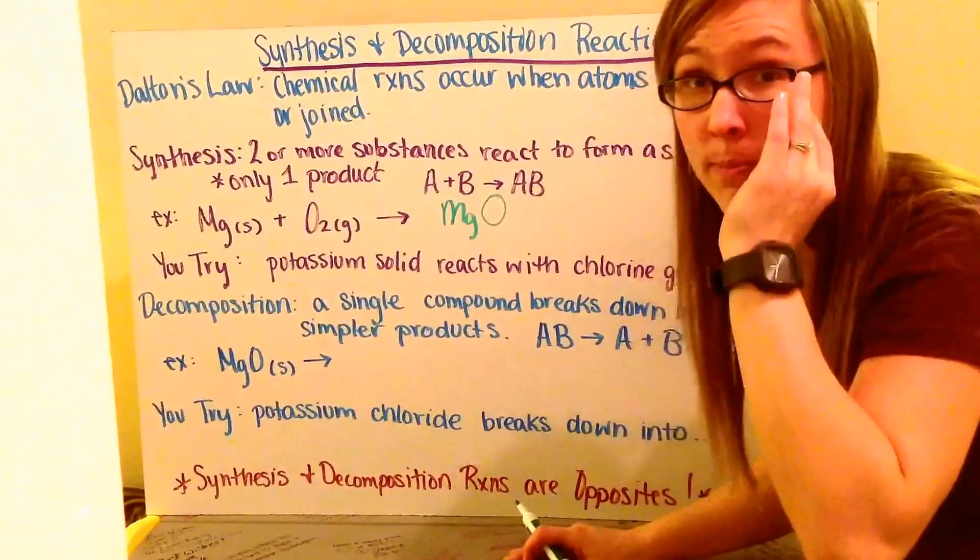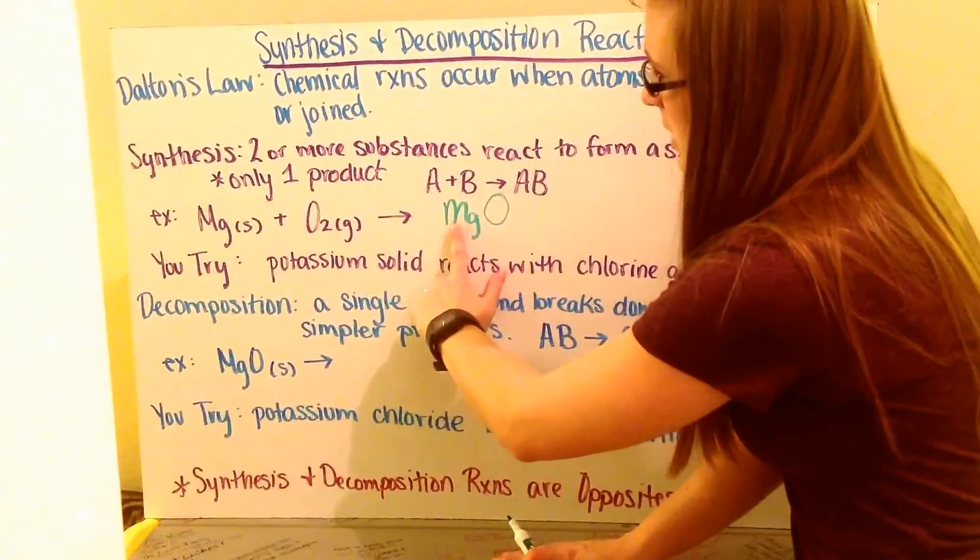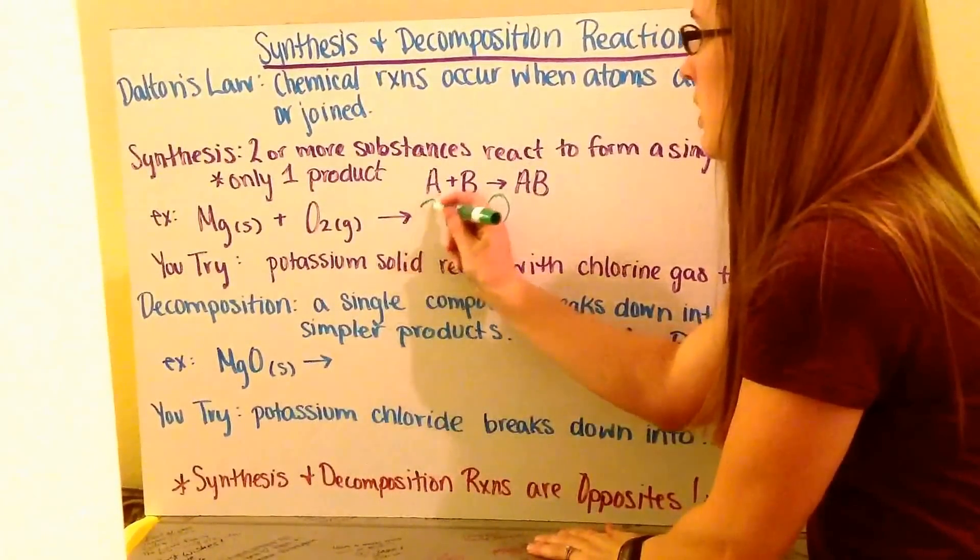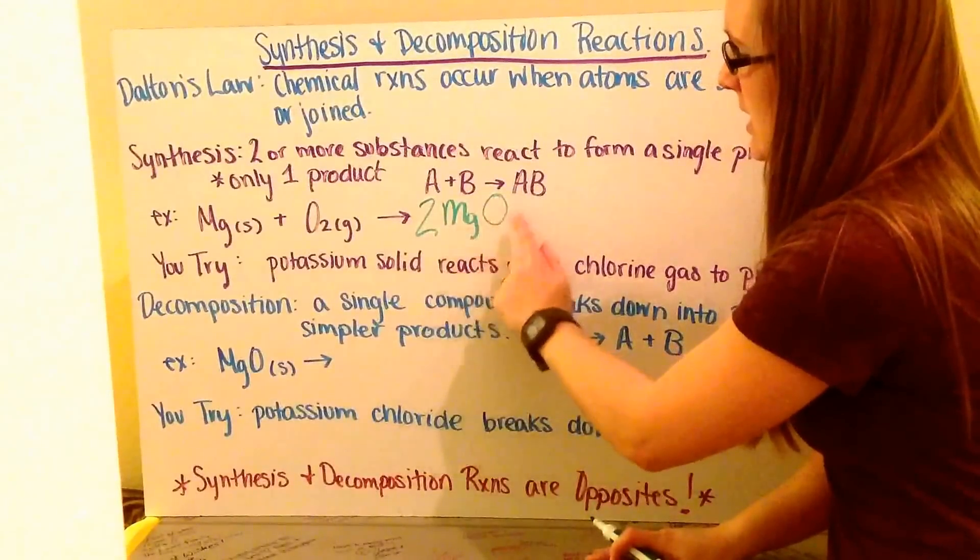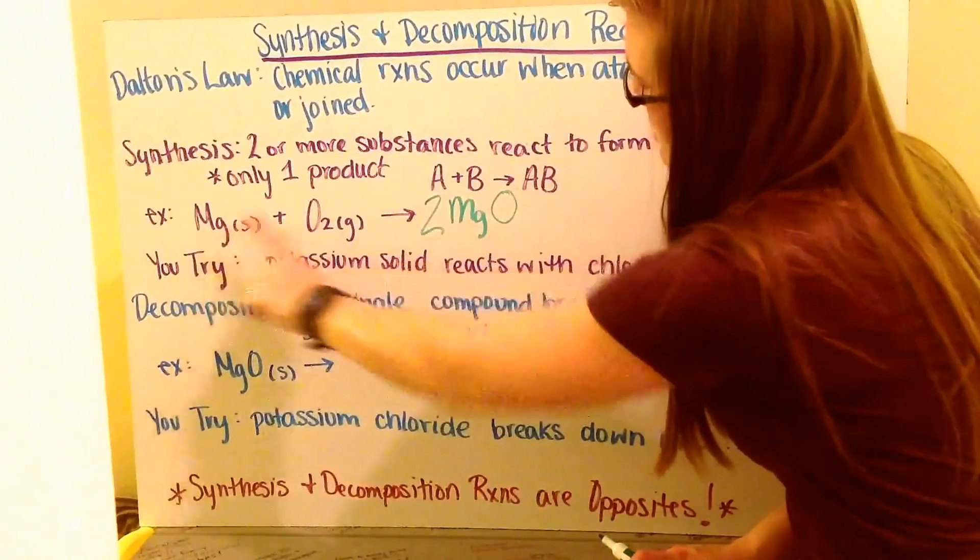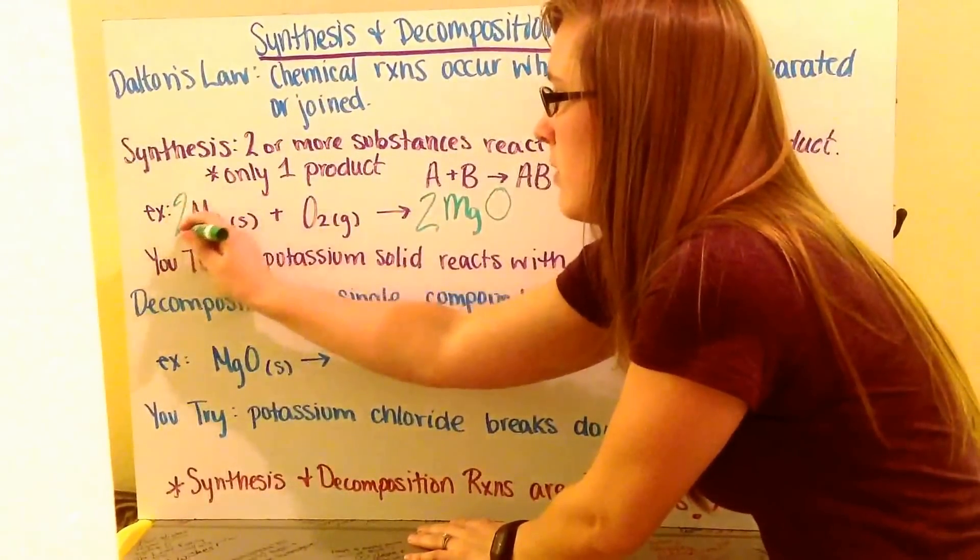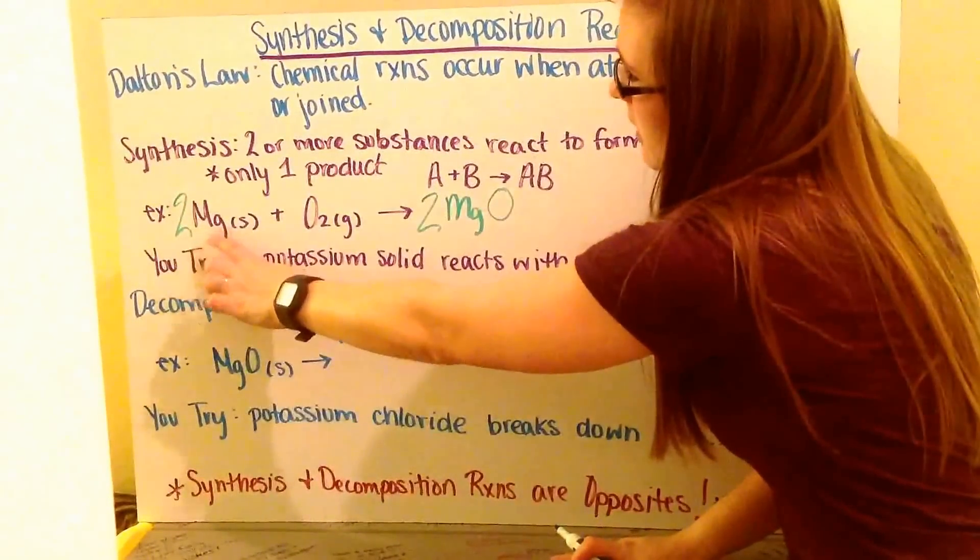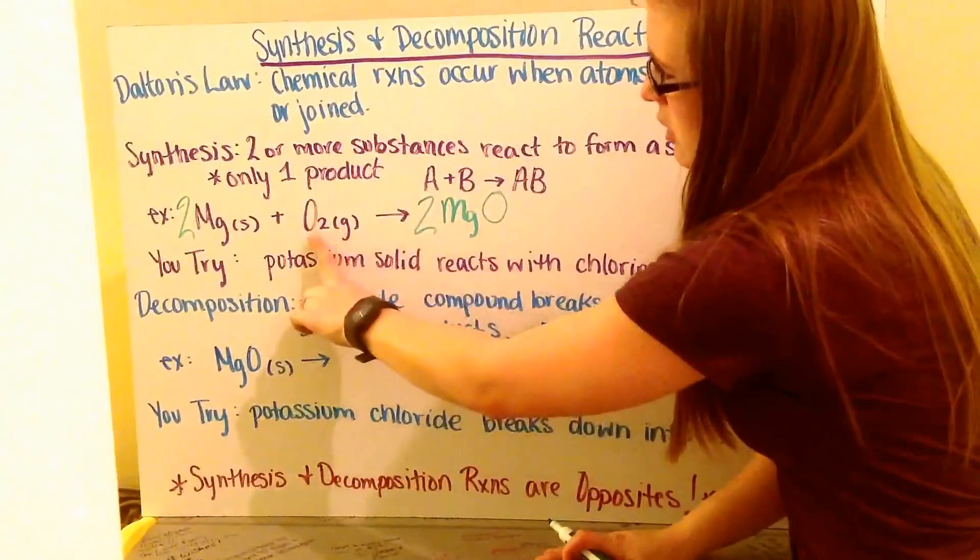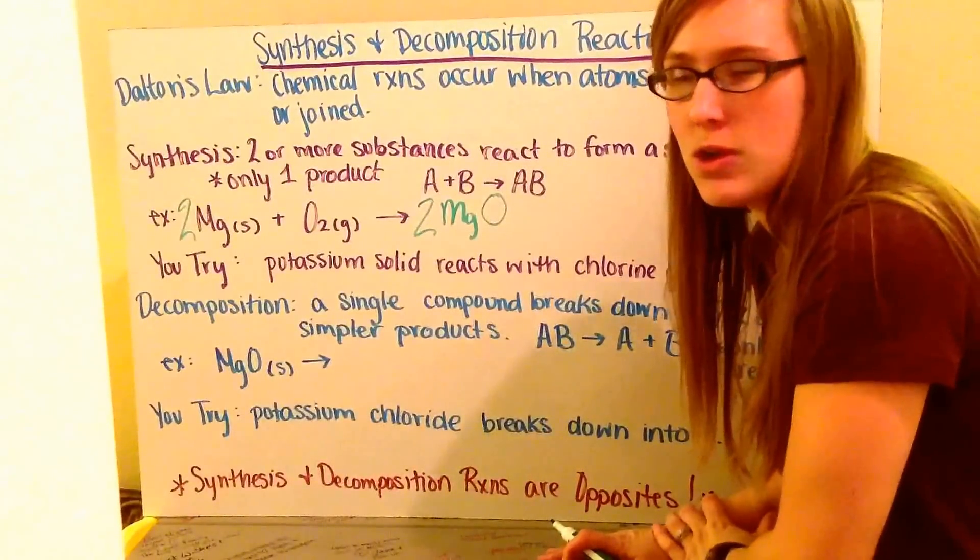Then I need to balance my reaction. One magnesium here, one here. Two oxygens here, one here. So I need to put a two in front of magnesium oxide. Then I go back and check. One magnesium, two magnesiums, so I need to put a two in front of magnesium here. Then I check again. Two magnesium, two magnesiums. Two oxygens, two oxygens. I now have a balanced chemical equation.